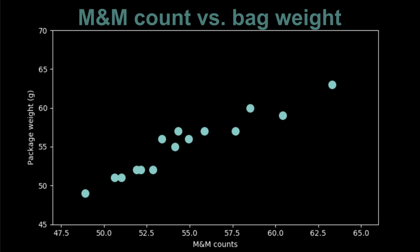There's a clear pattern here. Visually you can draw a diagonal line right through the middle of these points. This makes sense when you consider how very uniform in size M&Ms are. We're talking about the plain ones, not the peanut ones.